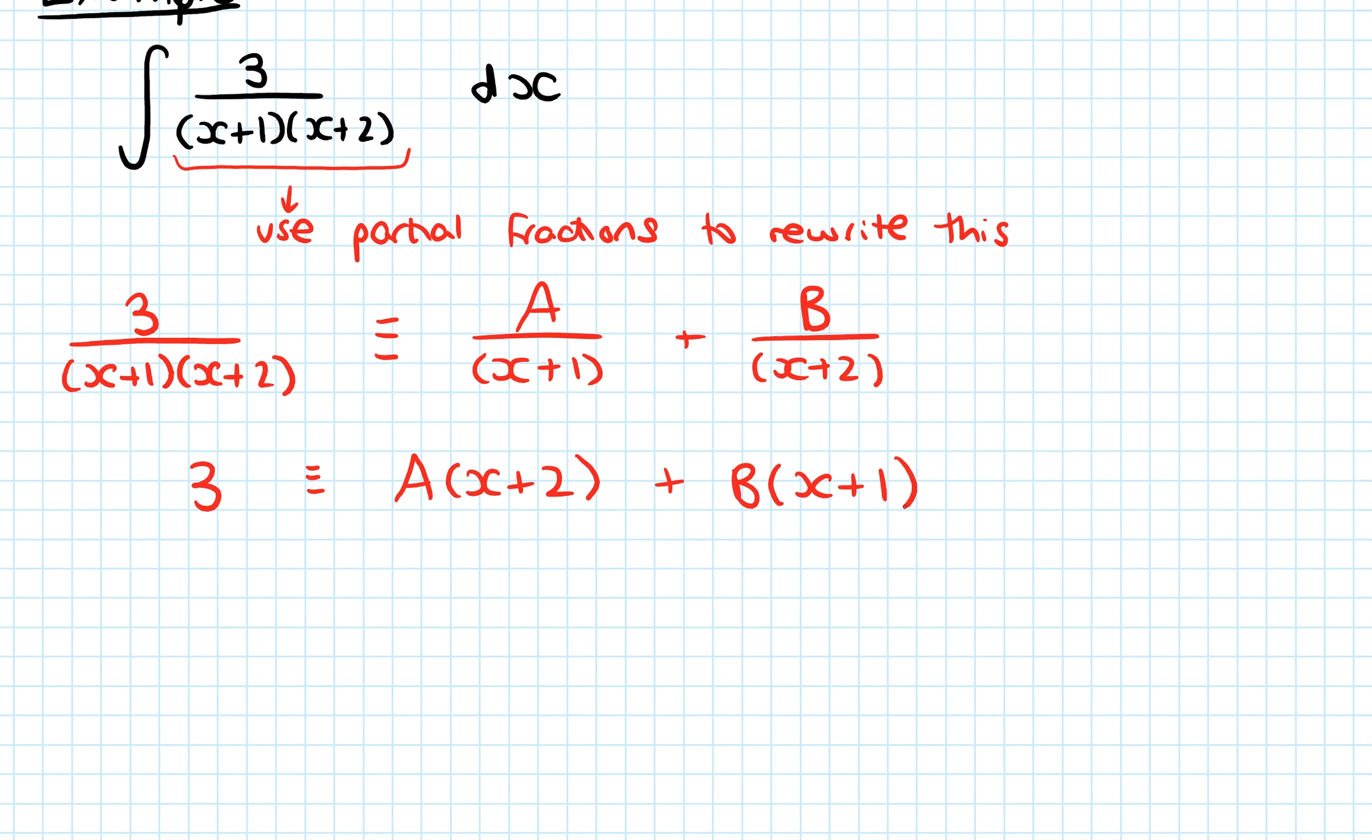And then the quickest way to do this is just to say, well, we want to make each of the brackets 0. So I'm going to start by saying what would happen if I let x equal minus 2.